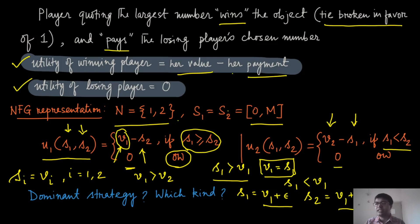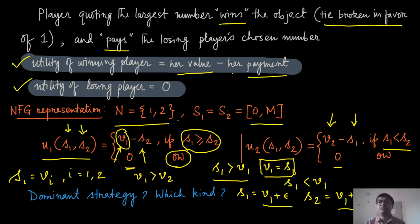Similarly, if Player 1 under-reports, say s1 = v1 − ε, and Player 2 reports v1 − ε/2, then s2 is less than v1 (Player 1's true value), so ideally Player 1 should have won and gotten positive utility of ε/2. But because Player 1 reported v1 − ε, Player 2 wins (s2 = v1 − ε/2 > s1 = v1 − ε), and Player 1 gets utility 0. So under-reporting also leads to a worse outcome.